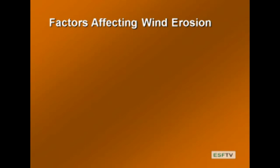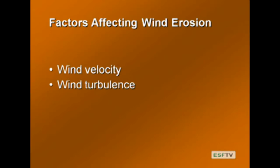Now we think about factors affecting wind erosion. Before, we had the WET model and the Universal Soil Loss Equation for water erosion. There's actually a wind erosion model, but we'll just consider the factors. The most obvious factor is wind velocity — how fast does the wind have to be to pick up particles? Around 25 kilometers per hour, or 15.5 miles per hour. Once the wind hits that velocity, it can pick up fine sand and silt-sized particles.